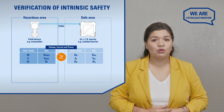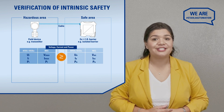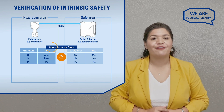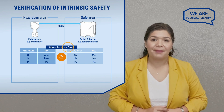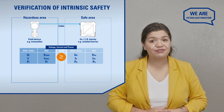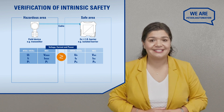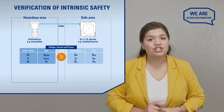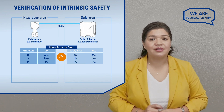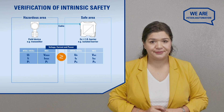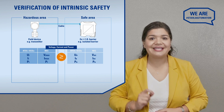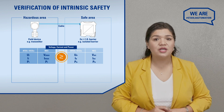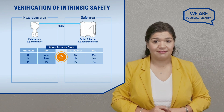Every intrinsically safe loop must be verified by checking the entity parameters on both sides. These are voltage, current, and power, which are known by different shorthands in the ATEX and NEC worlds. These parameters are the maximum energy a field device can handle in an intrinsically safe manner. In other words, the output values of the barrier must always be less than or equal to the input values of the field device.